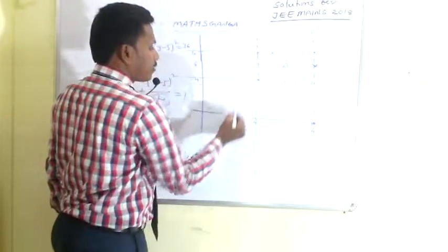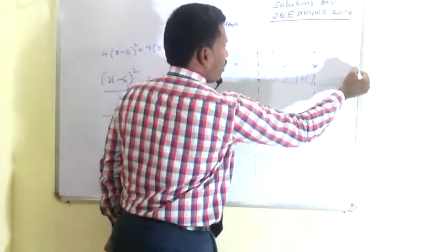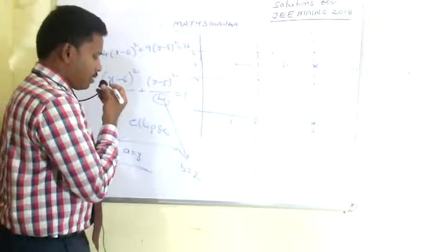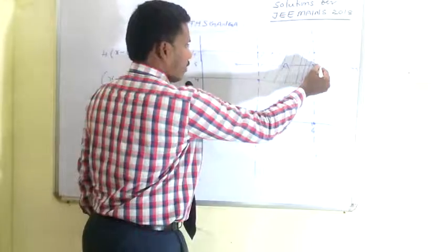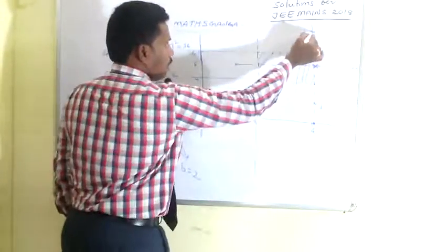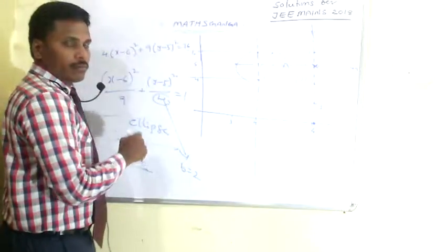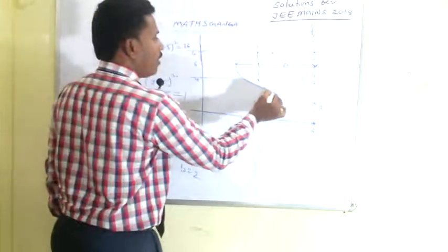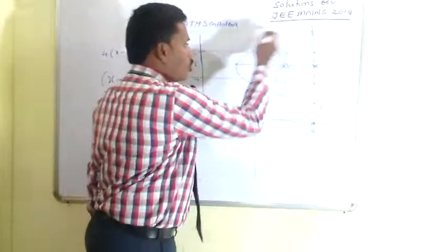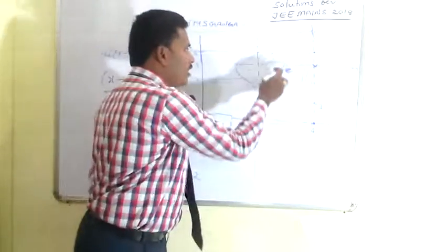With center (6, 5) and a = 3: moving 3 units left gives x = 3, and 3 units right gives x = 9 — these are the endpoints of the major axis. With b = 2: moving 2 units up gives y = 7, and 2 units down gives y = 3 — these are the endpoints of the minor axis. Drawing the ellipse through these points, Set B contains all ordered pairs lying inside or on the ellipse.